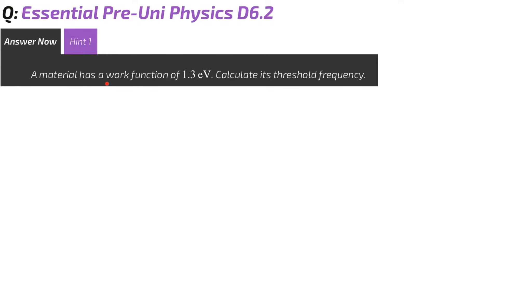The question tells us that the material has a work function of 1.3 electron volts. That means a photon must have at least 1.3 electron volts of energy for any electrons to leave the surface, to emit any photoelectrons. So that's what it means, calculate its threshold frequency.